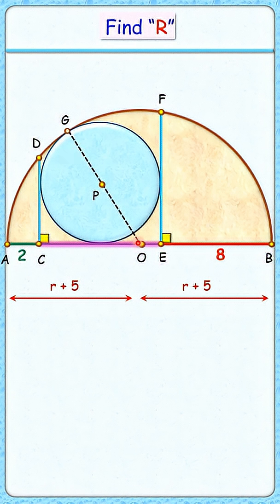OG length is also the radius of the brown semicircle, thus r plus 5 centimeters. Out of which GP is the radius, that's r centimeters, and thus PO length will be 5 centimeters.